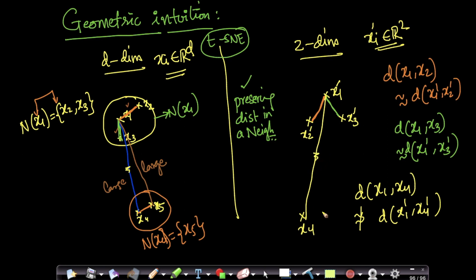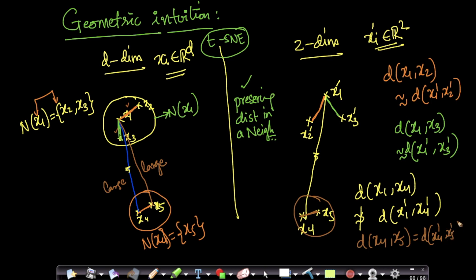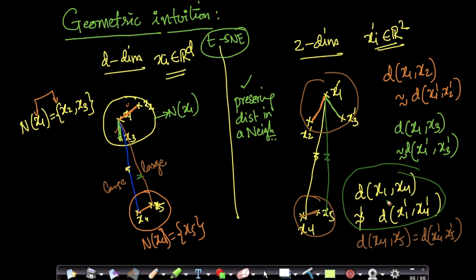But between x4 and x5, I will try to preserve this distance because they are in each other's neighborhood. So the distance between x4 and x5 is the same as the distance between x4-dash and x5-dash. Similarly, x1 to x5 — I will not make any guarantees, because they are not in the neighborhood.